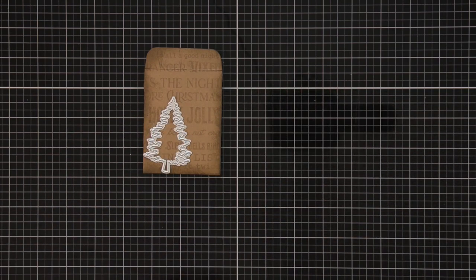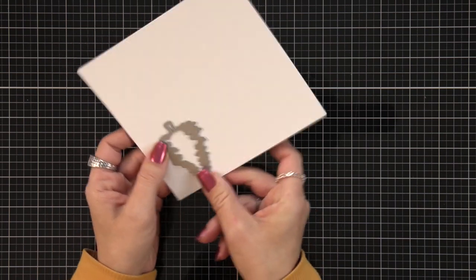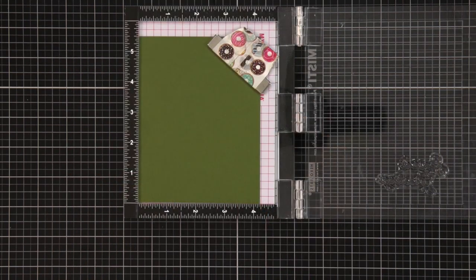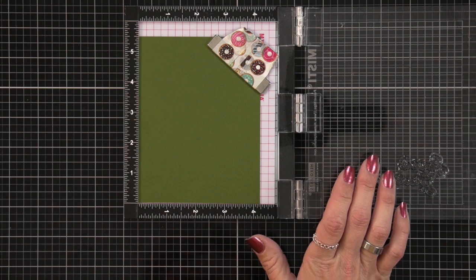So for decorating the front I'm keeping this super simple. I'm using the smallest tree out of the pine trees die set and I die cut that out of white cardstock.